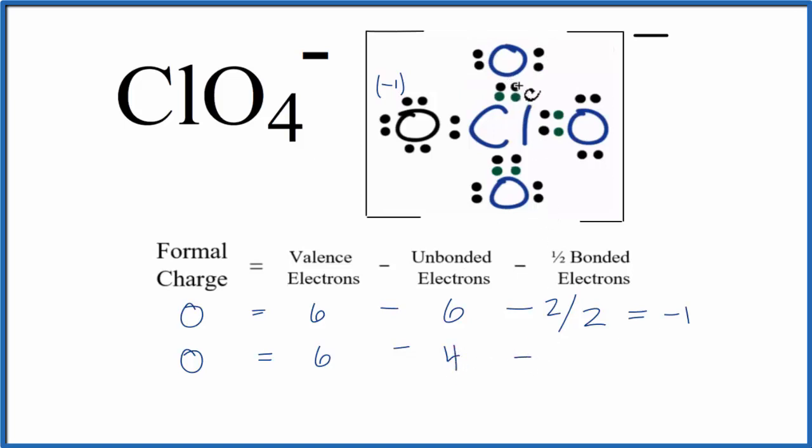Then we'll subtract one-half of the bonded valence electrons. We have 2, 4 of those. 6 minus 4 is 2, minus 2 equals 0. So the formal charge on this oxygen is 0.